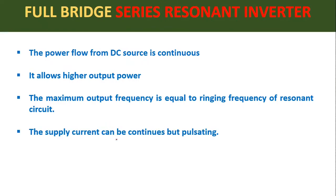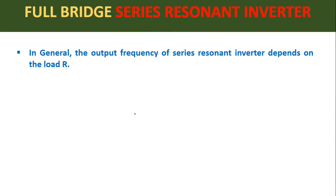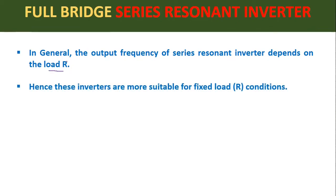In this full bridge series resonant inverter, the supply current can be continuous but pulsating in nature, and the harmonic content in the supply current is more compared to the half bridge series resonant inverter. In general, for series inverters — whether half bridge or full bridge — the output frequency depends on the load R, that is the resistance value. Hence these inverters are more suitable for fixed load, that is fixed resistance, conditions.